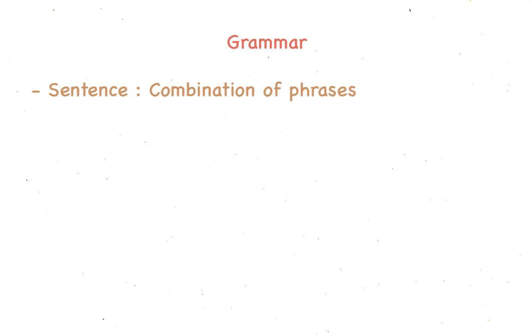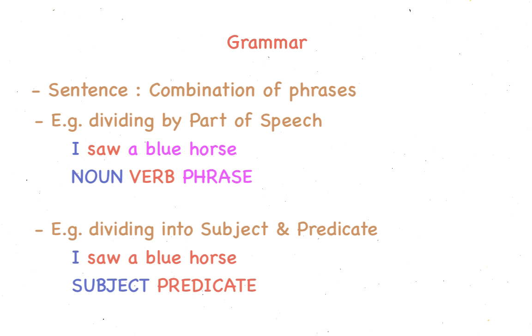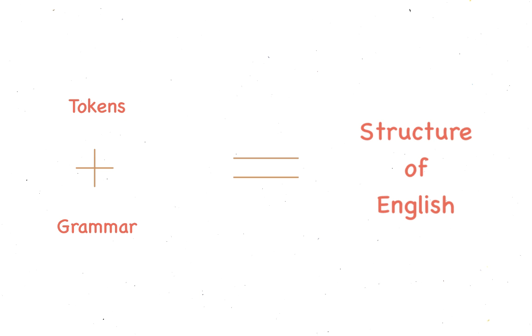These phrases, in turn, can be combined to form sentences. All we need to do is understand the syntax of various sentences. An example of a sentence in English would be 'I saw a blue horse.' So this would be a noun followed by a verb followed by a phrase. Or you can divide every sentence into subject followed by a predicate, where every subject would be of the form of a noun, and the predicate would be the rest of the sentence. By defining tokens, both single character and multi-character, and defining how these tokens should appear, we have effectively defined the structure of the English language.